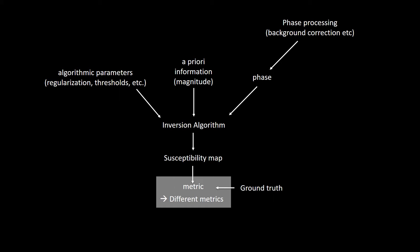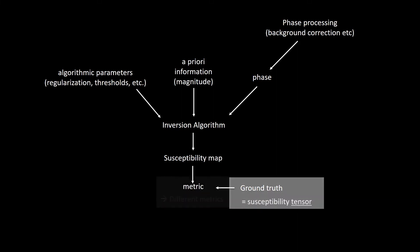We also provided source code that computes multiple error metrics to create a multi-dimensional performance vector. As ground truth, we decided to use Chi-3-3, which is one of the diagonal elements of the susceptibility tensor solution. With this, we aim to mitigate orientation dependence and anisotropy effects, but I will come back to this point later.